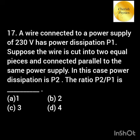A wire connected to a power supply has a power dissipation P1. Suppose the wire is cut into two equal pieces and connected in parallel to the same supply. In this case the power dissipation is P2. The ratio P2 by P1 is?